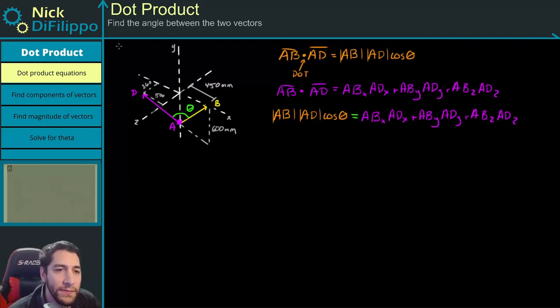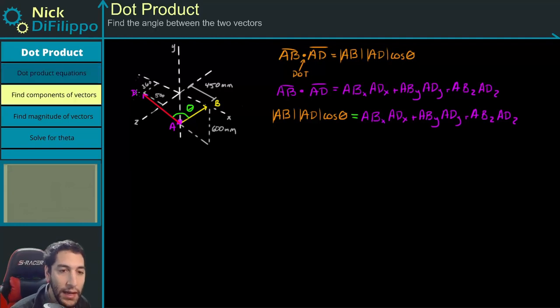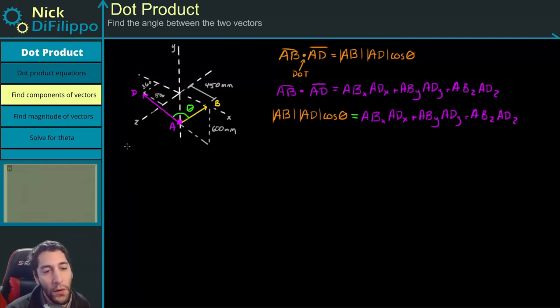Now, how do we do this? Well, in 3D, what we can do is we can create two position vectors. If I create a position vector here and I create a position vector here, then I can figure out the angle between those two position vectors. When I'm creating these position vectors, what I need to do is I need to list out the points that I know. So I know where point A is, I know where point D is, and I know where point B is.